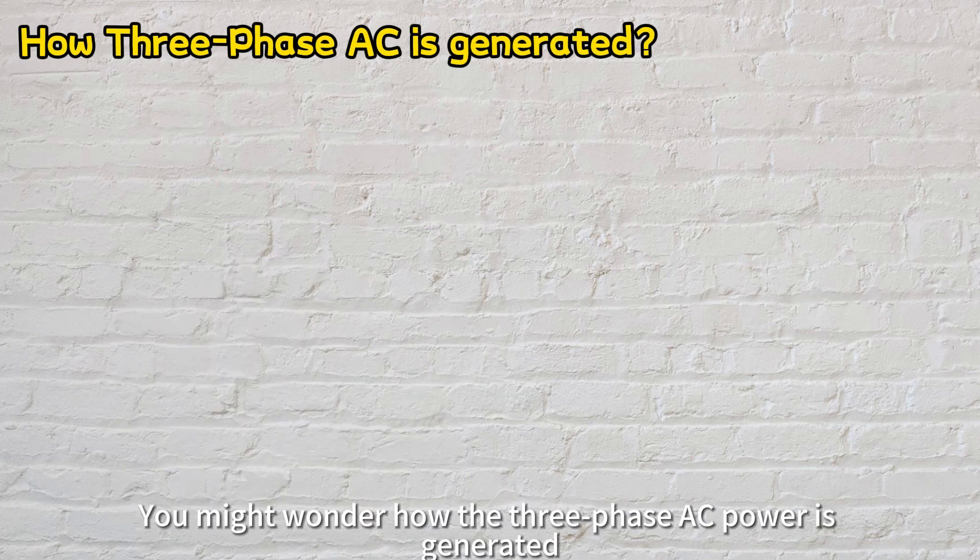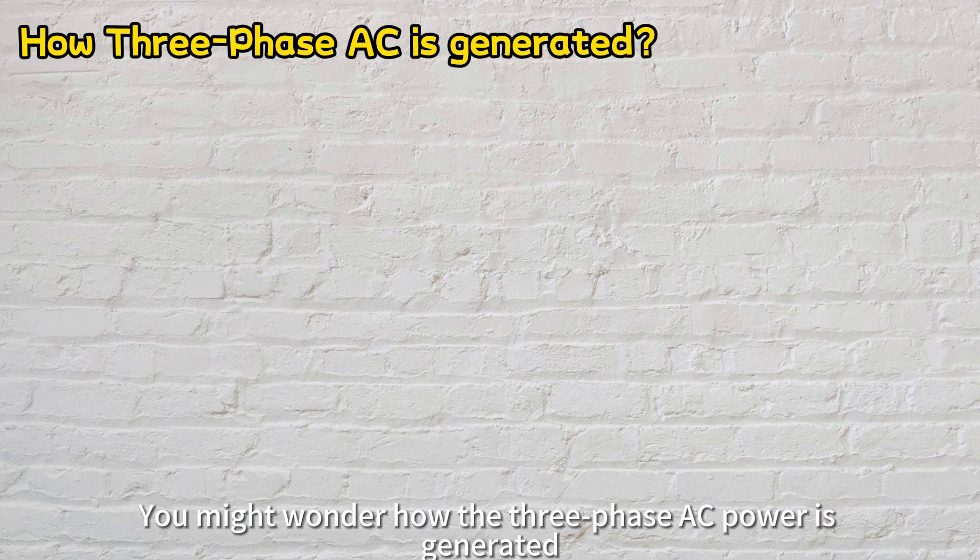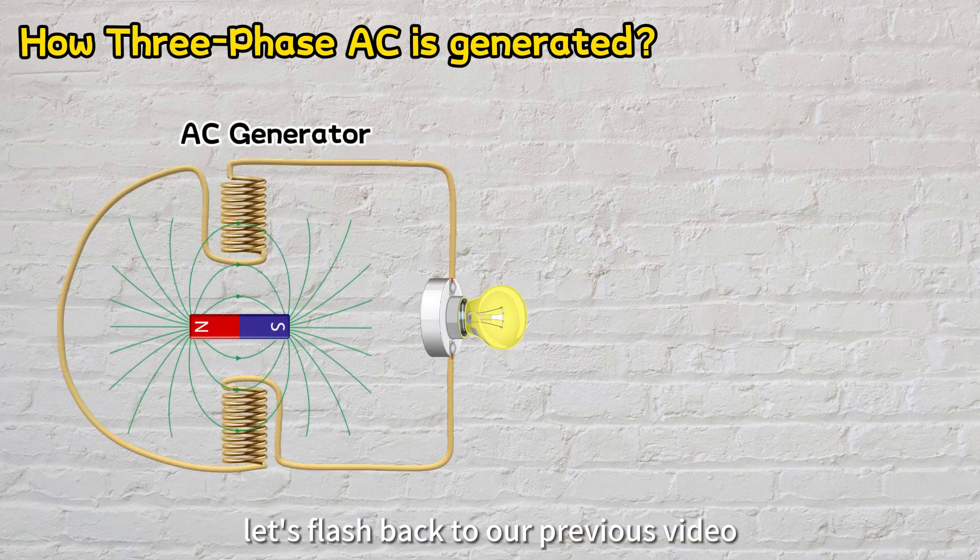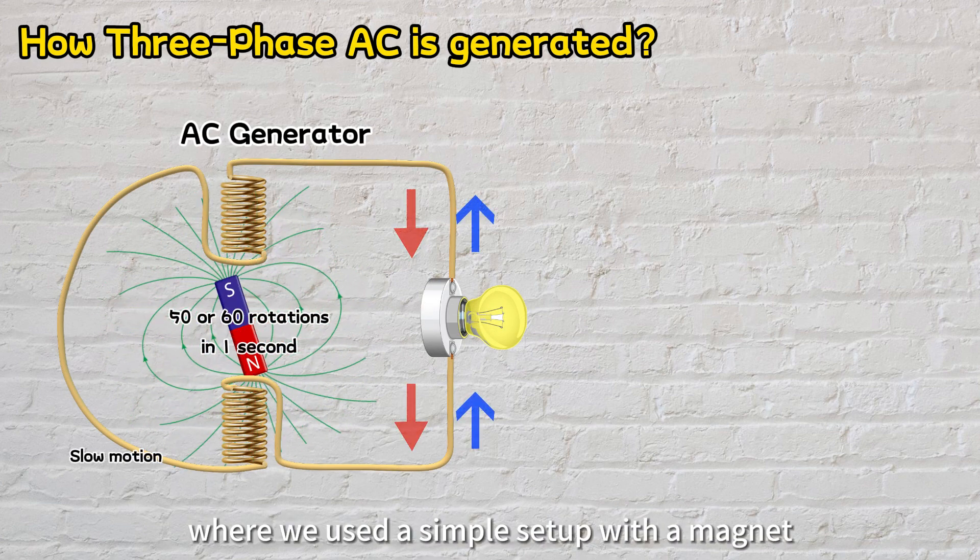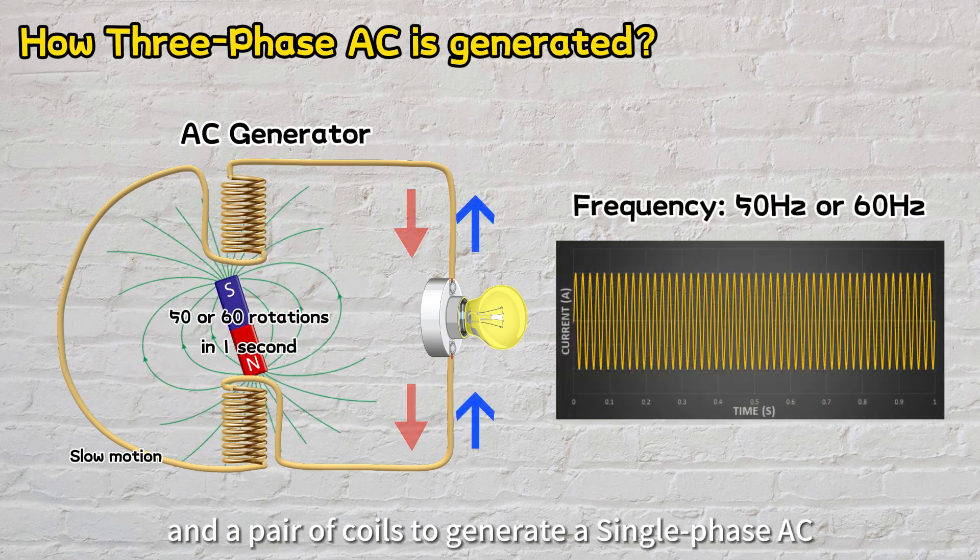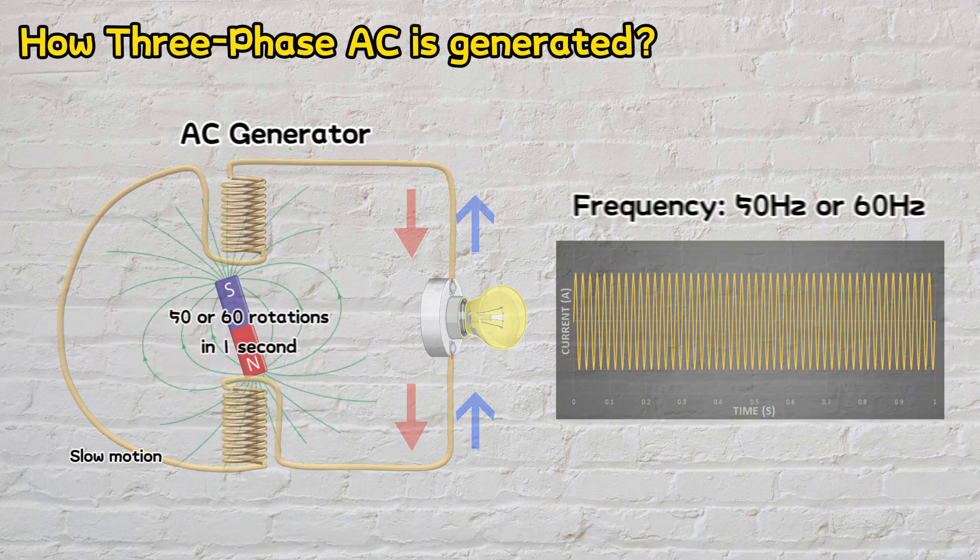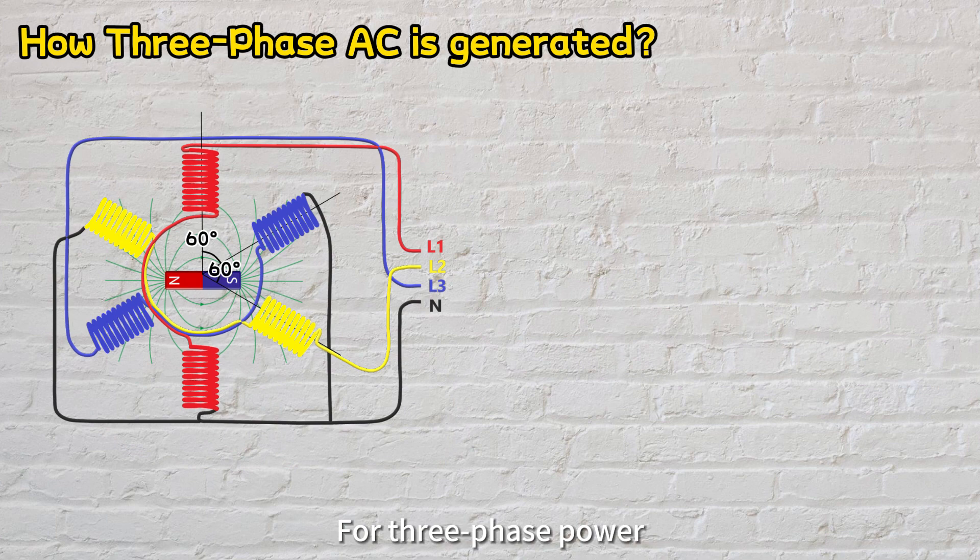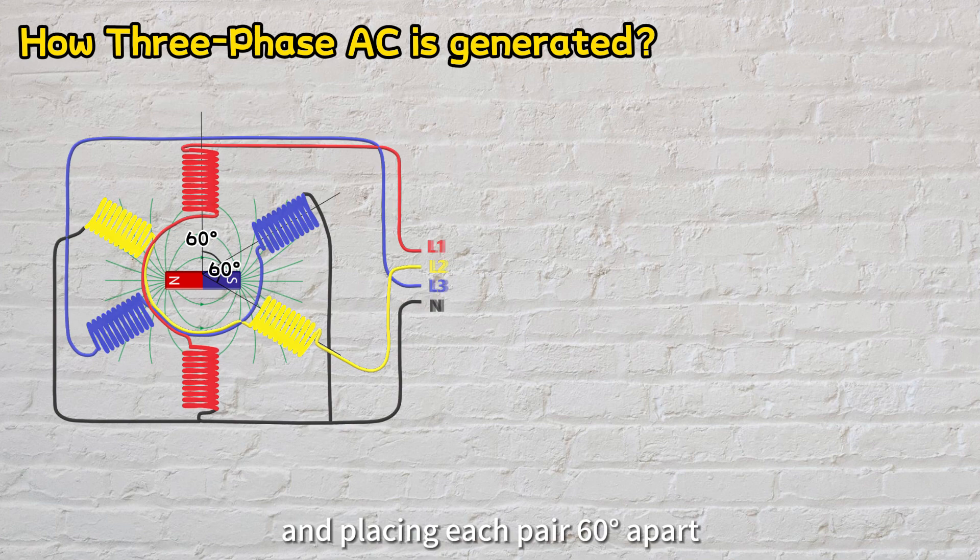You might wonder how three-phase AC power is generated. Let's flashback to our previous video where we used a simple setup with a magnet and a pair of coils to generate single-phase AC. Well, for three-phase power, we're adding two more pairs of coils to our setup and placing each pair 60 degrees apart.